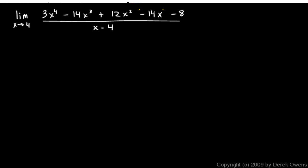So let's do this. This is 3 times 4 to the 4th, which is 256, minus 14 times 4 cubed, which is 64, plus 12 times 4 squared, which is 16, minus 14 times 4 minus 8. And if you work all that out, it comes out to 0. So this is 0 over 0.